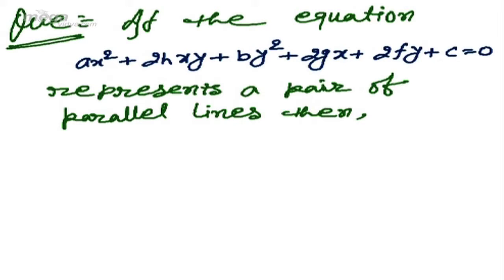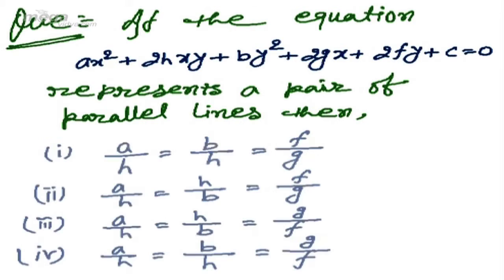The question is: if the equation ax² + 2hxy + by² + 2gx + 2fy + c = 0 represents a pair of parallel lines, then which condition holds? The options are: (1) a/h = b/h = f/g, (2) a/h = h/b = f/g, (3) a/h = h/b = g/f, (4) a/h = b/h = g/f.